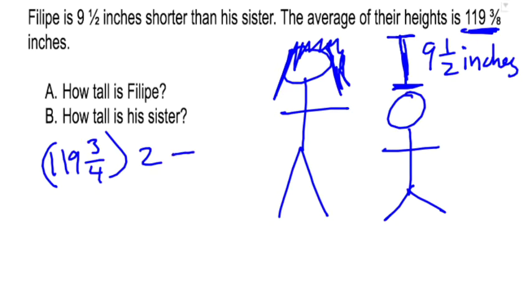If I subtract nine and a half inches, I will have two Philippes. And then if I divide all of that by two, I will have one Philippe.